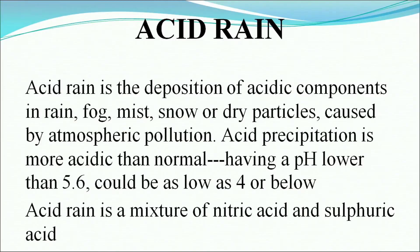Our next topic is acid rain — the deposition of acidic components in rain, fog, mist, snow, or dry particles caused by atmospheric pollution. Acid precipitation is more acidic than normal; normal pH is around 7, while acid rain has a pH around 5.6 or lower, as low as 4. Acid rain is a mixture of nitric acid and sulfuric acid.